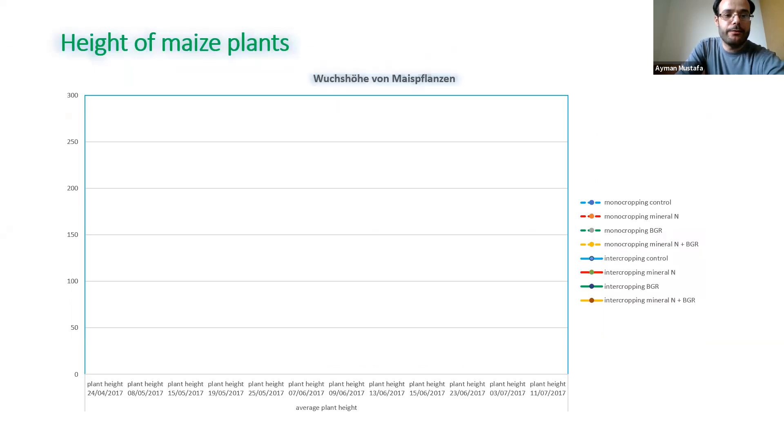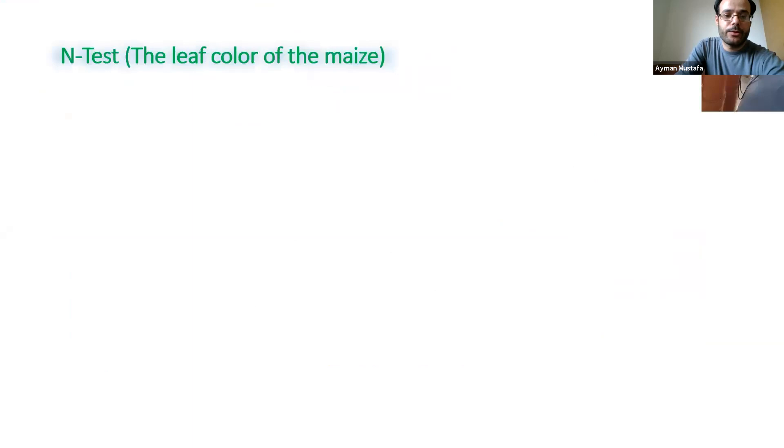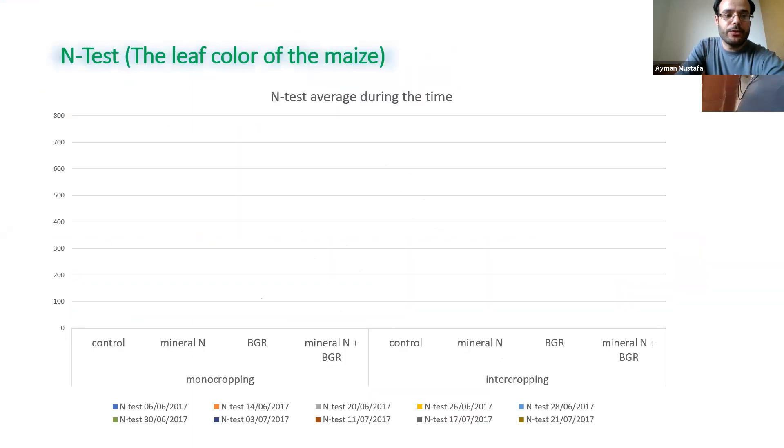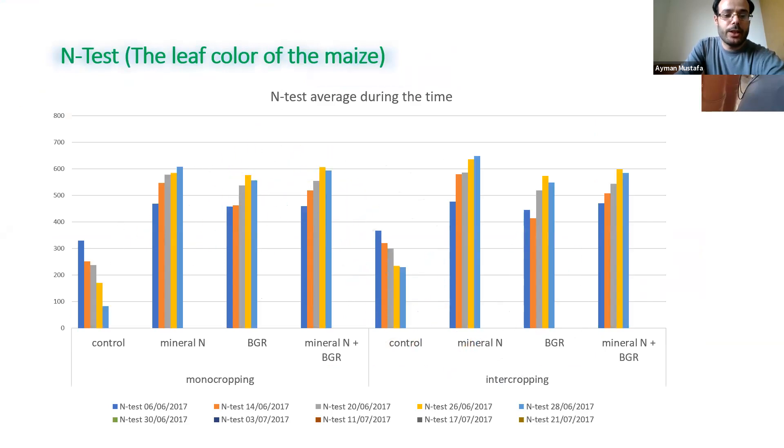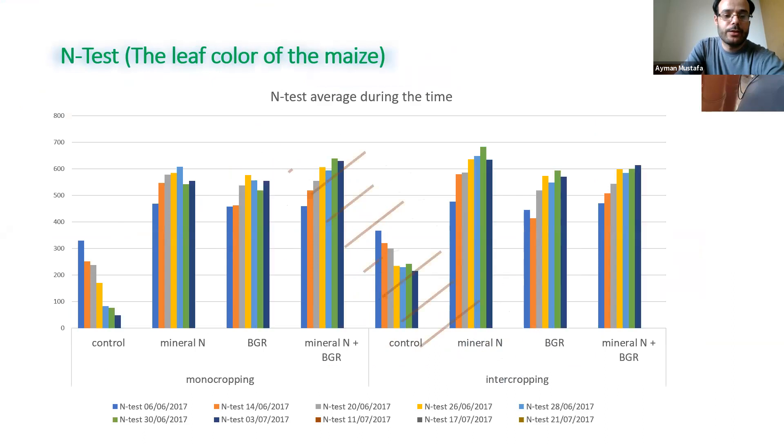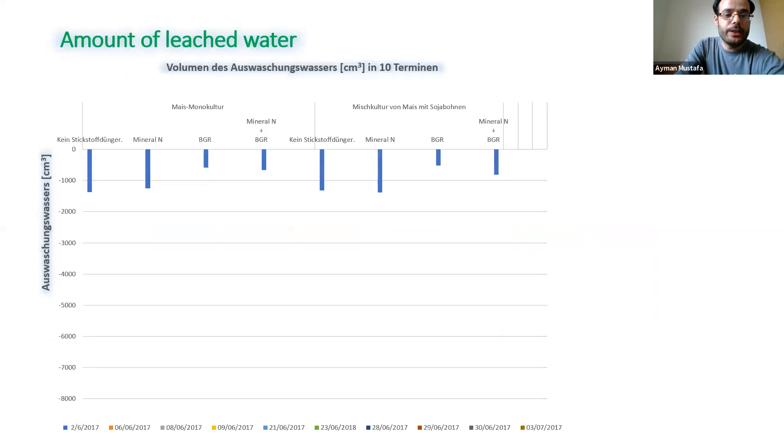The height of maize plants we have measured in different growth stages, and also the N test we've taken in different growth stages. The amount of leaching water we've taken after each irrigation.